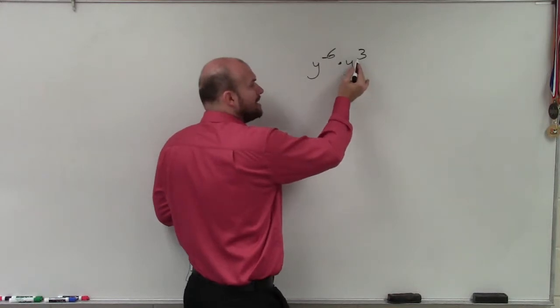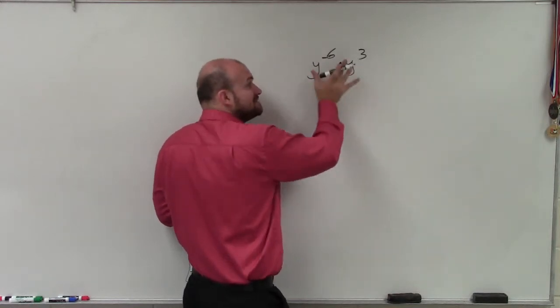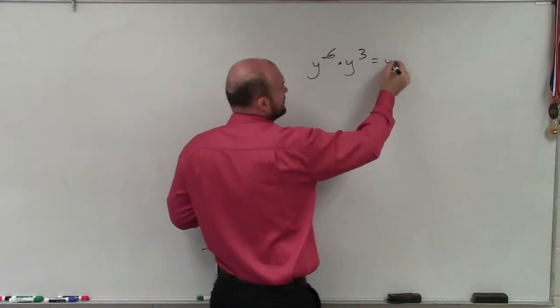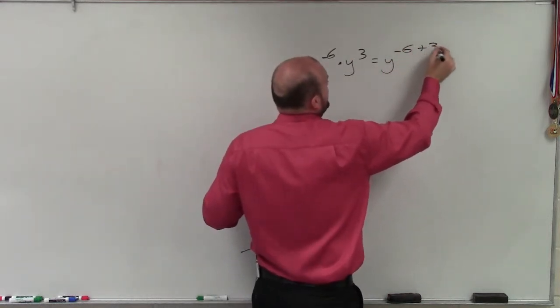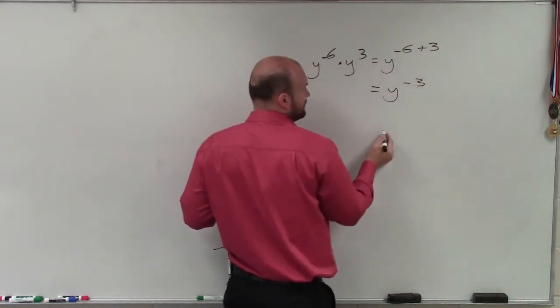So when I use the product property, what that states is whenever you multiply the exponents with the same base, you simply just add the exponents. So therefore, this is y to the negative 6 plus 3, which equals y to the negative 3.